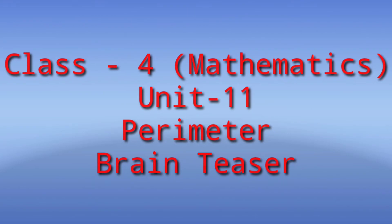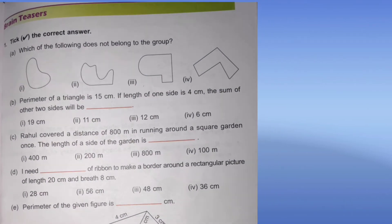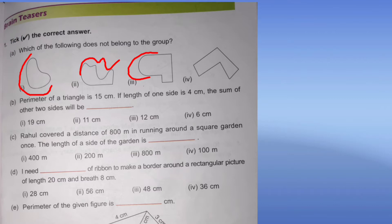Question number one: tick the correct options. Which of the following does not belong to the group? We are given 4 figures. We need to find the odd one out. All figures have curved lines used somewhere, but the fourth figure uses only and only straight lines — line segments. So the fourth one is the odd one out.